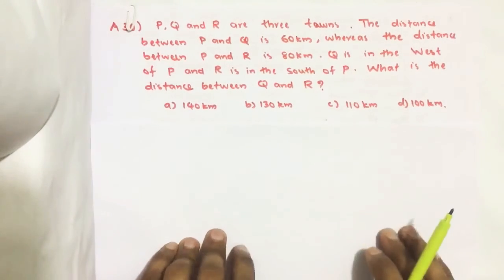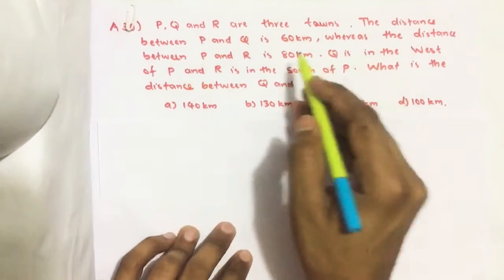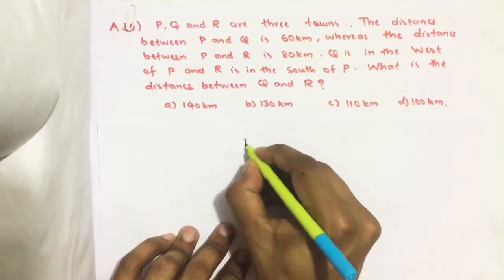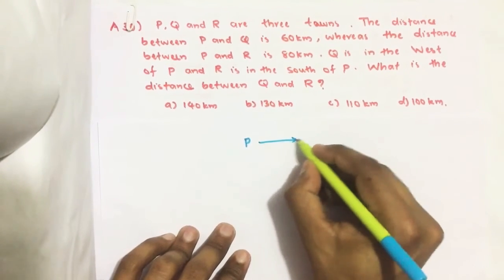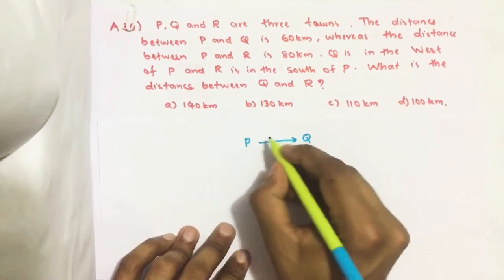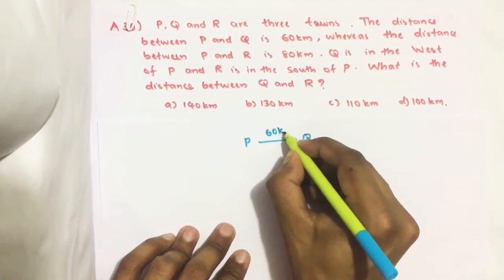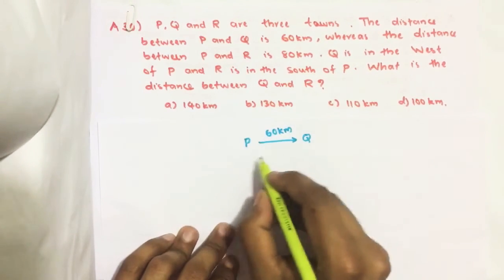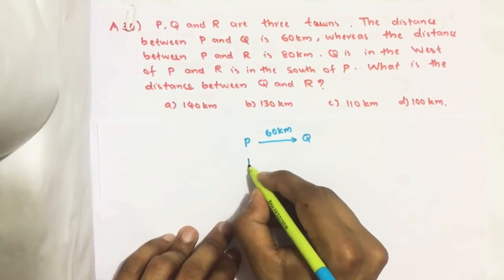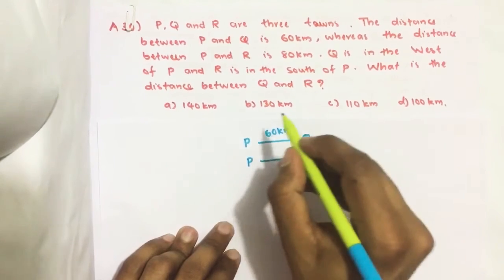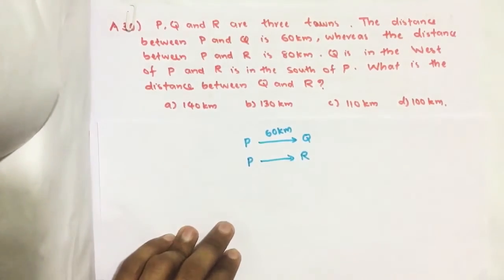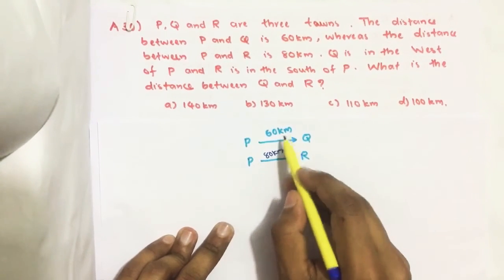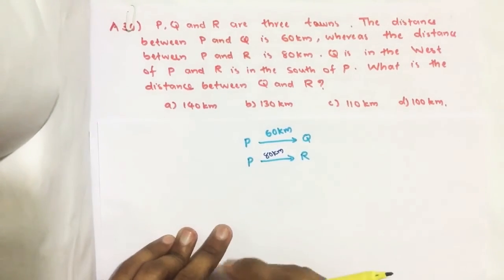So we have to find what is the distance between Q and R. The given information: the distance between P and Q is 60 kilometers, and the distance between P and R is 80 kilometers.